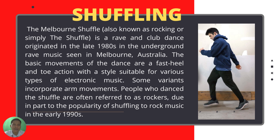Next up is shuffling. The Melbourne Shuffle, also known as rocking or simply the shuffle, is a rave and club dance that originated in the late 1980s in the underground rave music scene in Melbourne, Australia. The basic movements are fast heel and toe action with a style suitable for various types of electronic music. Some variants incorporate arm movements, and people who dance the shuffle are often referred to as rockers due to the popularity of shuffling in rock music in the early 1990s.